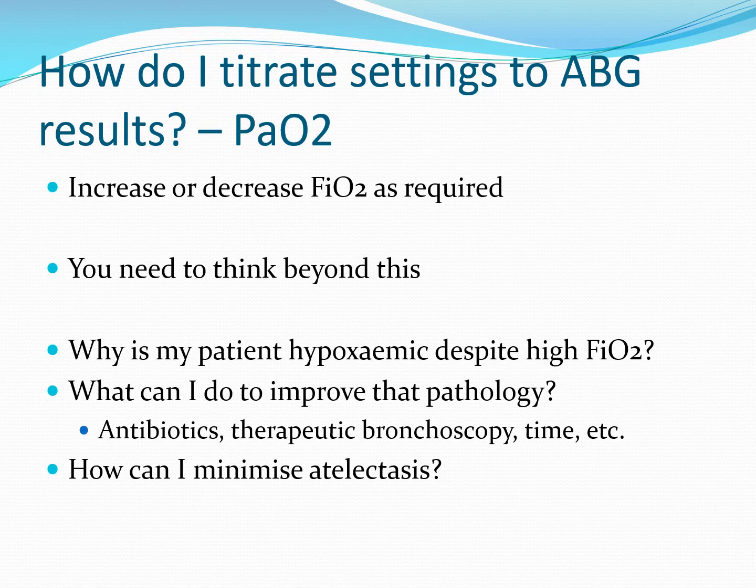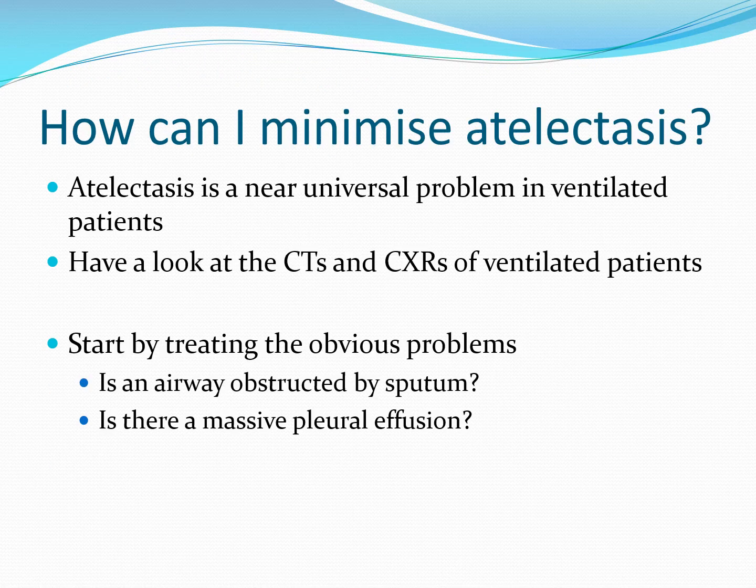How about oxygen? The simple answer is you increase or decrease the FiO2 as required, but I'd encourage you to think beyond that. Why is your patient hypoxemic despite a high oxygen concentration? What can you do to improve that pathology? That might be antibiotics, it could be a therapeutic bronchoscopy, or it could simply be a matter of waiting. And how can you minimize atelectasis? Atelectasis is a near universal problem for ventilated patients — just look at the CT scans and chest x-rays of ventilated patients on your intensive care unit. Almost all of them will have a degree of atelectasis.